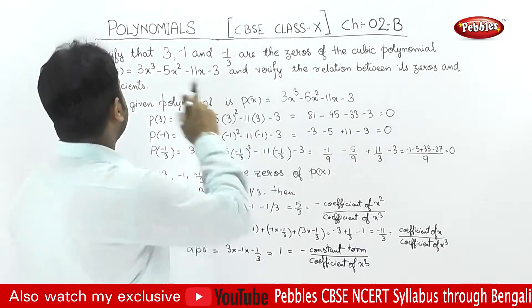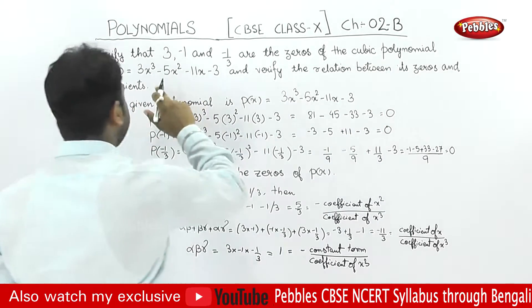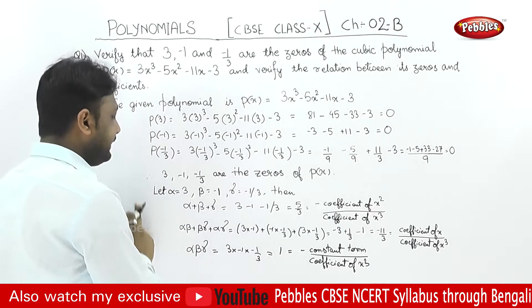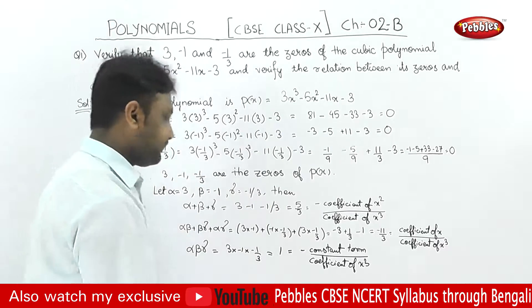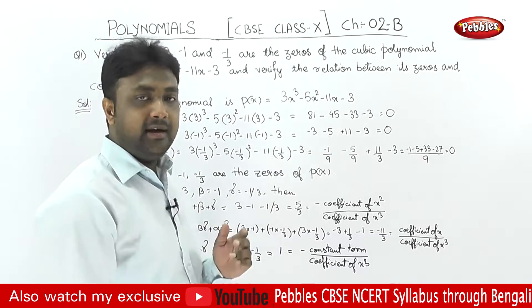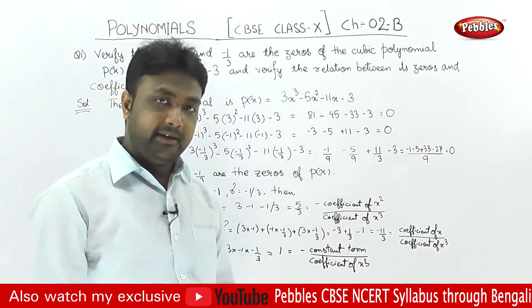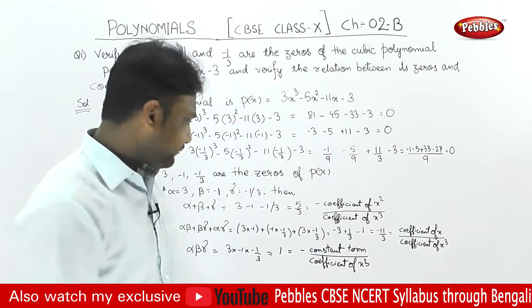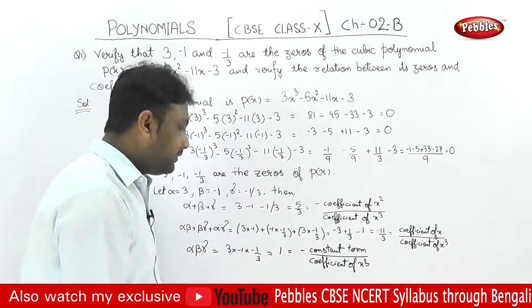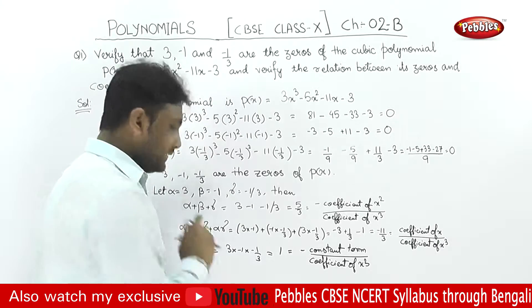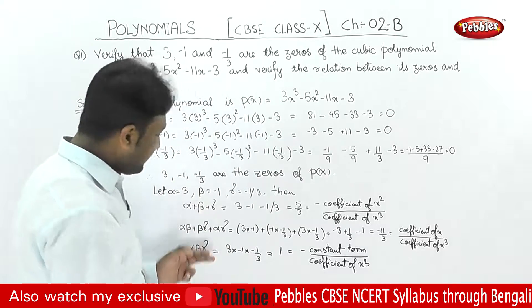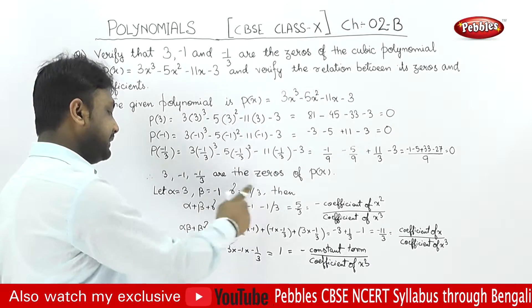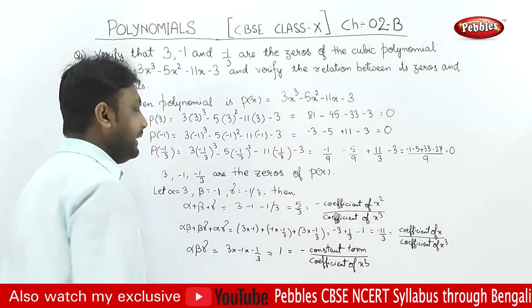Now verify the relation between zeros and coefficients. Let alpha equals 3, beta equals minus 1 and gamma equals minus 1 by 3. We use the relations: alpha plus beta plus gamma equals minus b by a, alpha beta plus beta gamma plus alpha gamma equals c by a, and alpha times beta times gamma equals minus d by a.